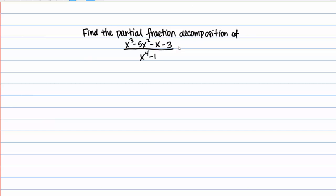In this video, we're going to find the partial fraction decomposition of the rational function shown here. Whenever we're asked to find the partial fraction decomposition of a rational function, the first thing we always want to check is to make sure that the rational function is proper. For a rational function to be proper, the degree of the denominator needs to be greater than the degree of the numerator. That's the case here, so this rational function is proper. We can only use partial fraction decomposition on proper rational functions, which is why it's always important to check. If it's improper, you can begin by using long division to rewrite the rational function. But in this case, we're fine to go ahead and do partial fractions.